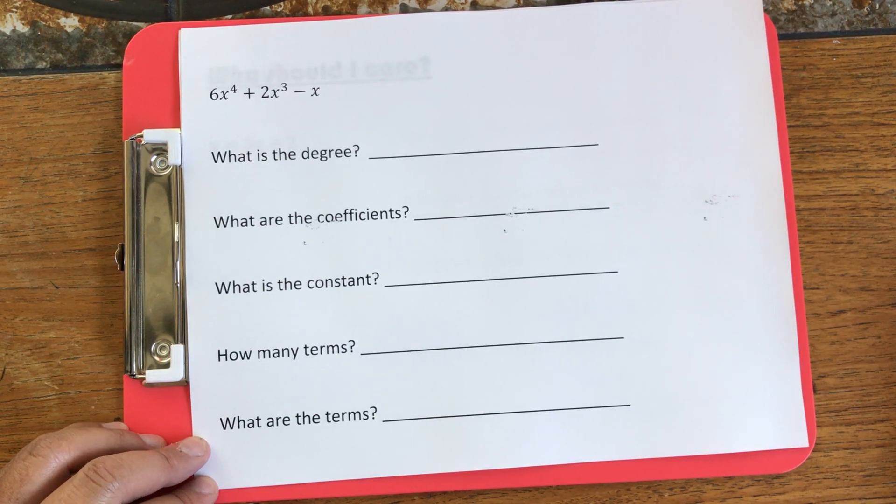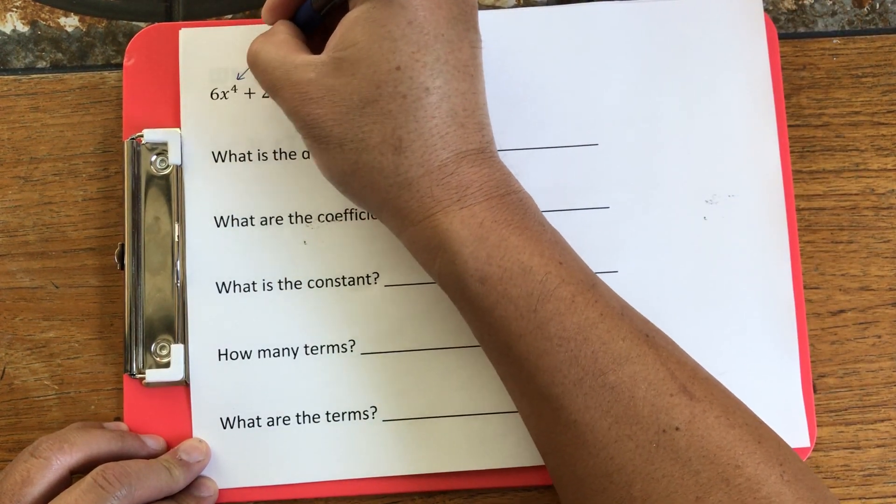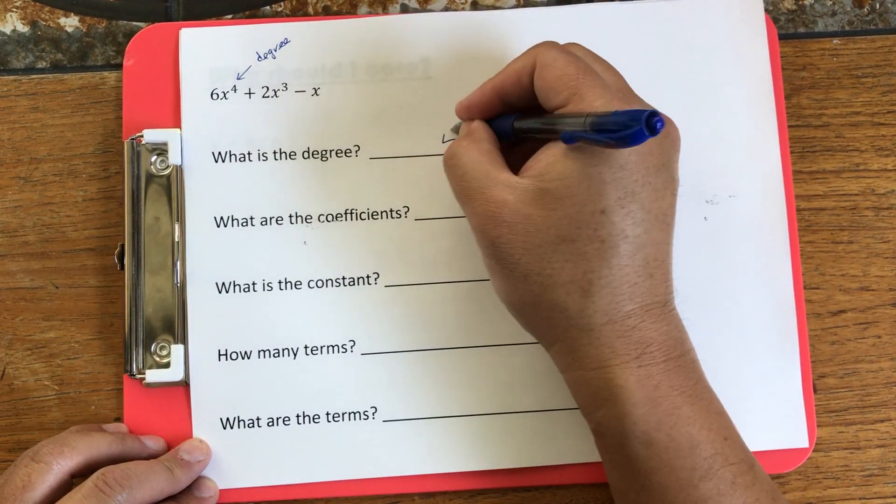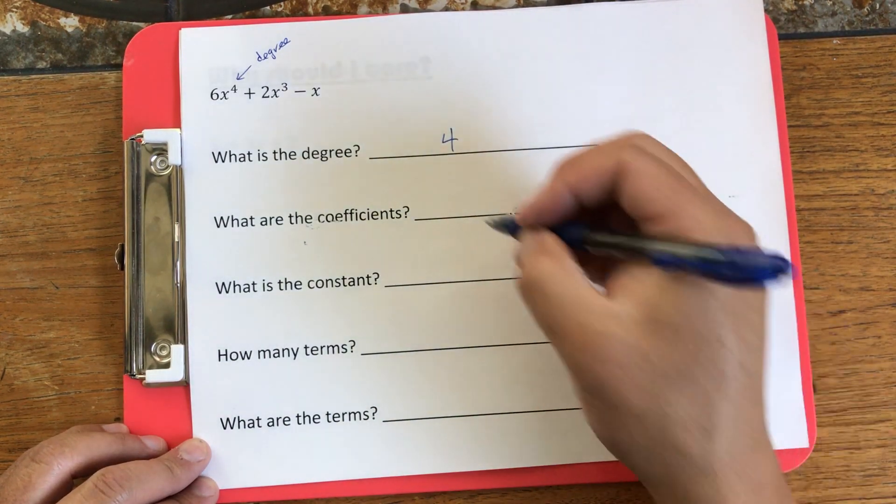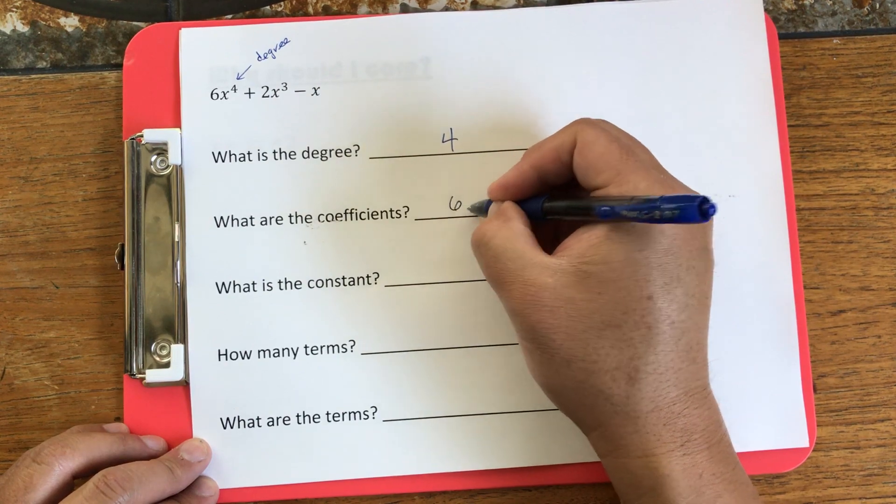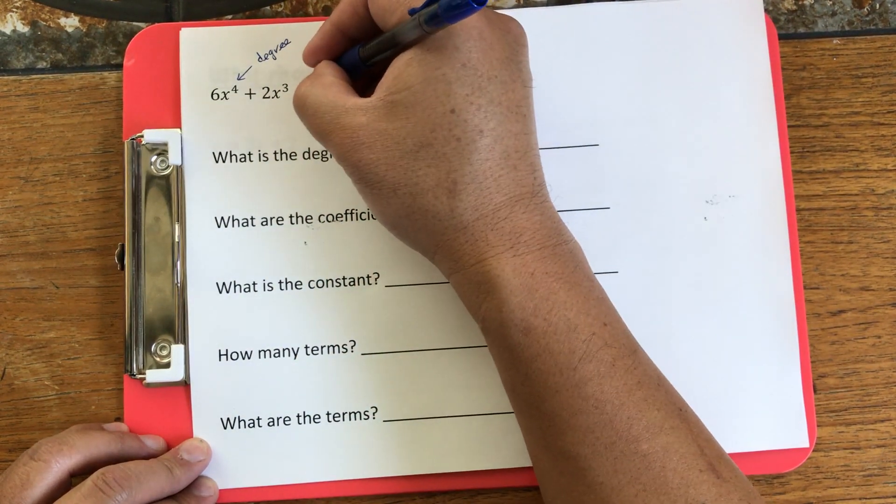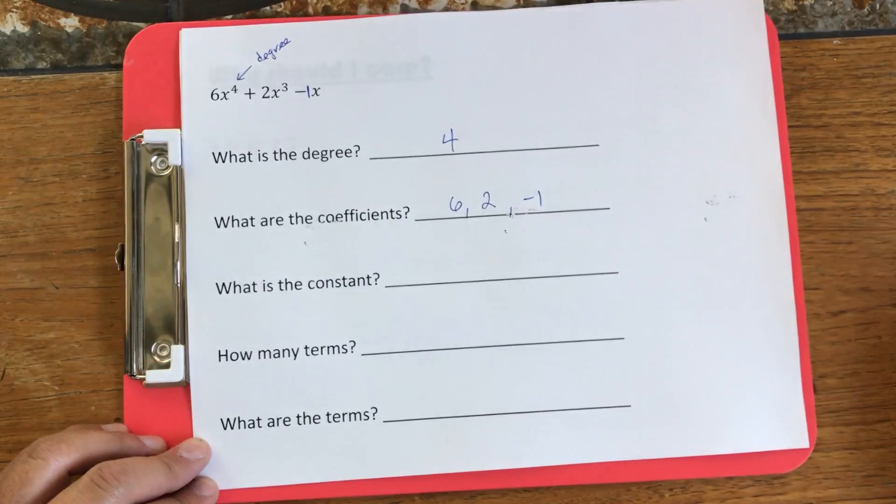So when we say, what is the degree, well, that's the largest exponent. And we say, what is the coefficient? Well, what are the numbers that are in front of the variable, 6, 2. And even though you don't see it, there's a minus 1 there. So we also have minus 1 as a coefficient.